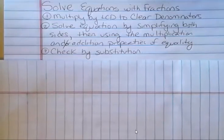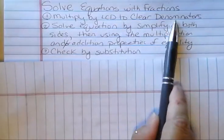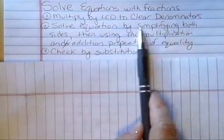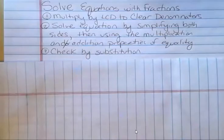The method I'm going to show you is to multiply by the least common denominator to clear the denominators out, then solve the equation by simplifying both sides, then using the multiplication and or addition properties of equality as needed. And then, of course, you can always check by substitution.